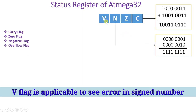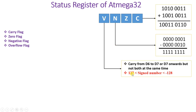The next bit is the V flag, that is the overflow flag, and it indicates data is exceeding the limit. The limit is: if data is greater than 127 or lower than minus 128, this overflow flag will get set to 1. This means carry from D6 to D7, or from D7 onwards, but not both at the same time. In short, if an operation results in an answer greater than 127 or lower than minus 128, the overflow flag will get set to 1.